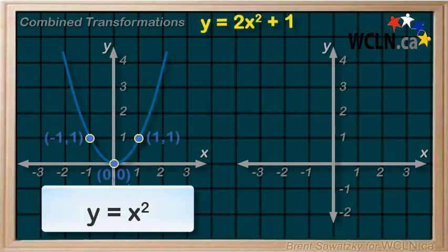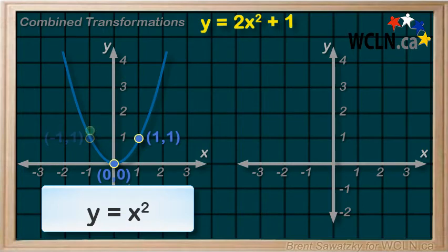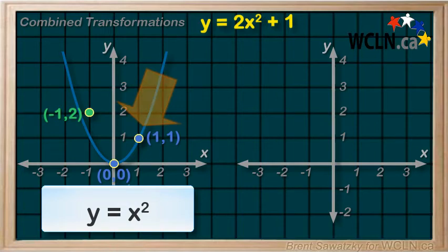And here are three points. Looking at this one first, negative 1, 1. And we multiply the y value by 2. The x value stays the same. And we get negative 1, 2. For this point, 1, 1. Again, multiply the y value by 2.